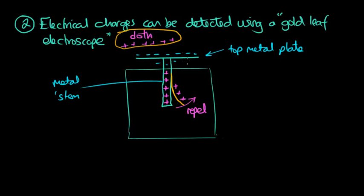Now the opposite thing would happen if the cloth was negatively charged. The electrons would be repelled to the base of the stem and into the gold leaf. And the same thing would happen. The gold leaf would rise because it's been repelled. Because like charges repel.